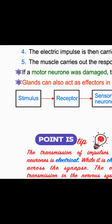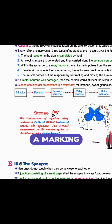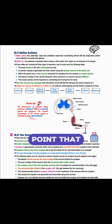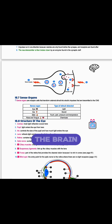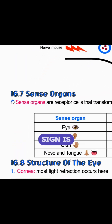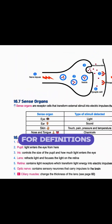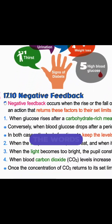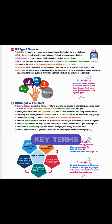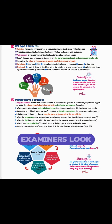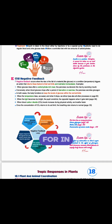Every bullet point is a marking scheme point that is worth one mark. The brain sign is for definitions, and the words in pink are the key terms examiners look for in your answers.